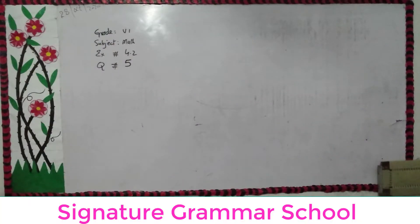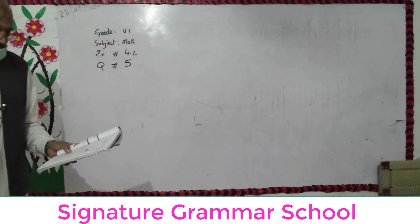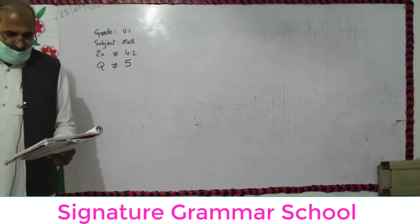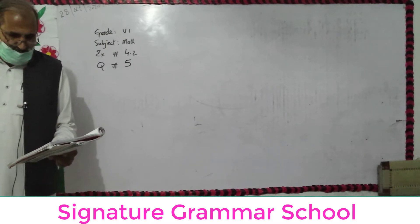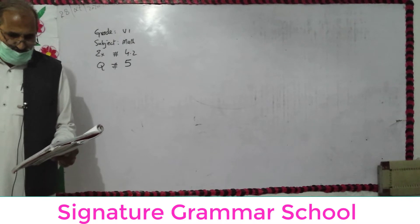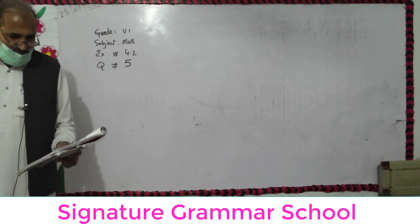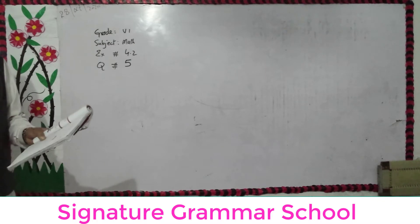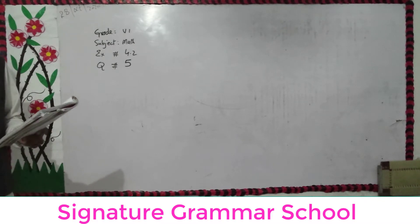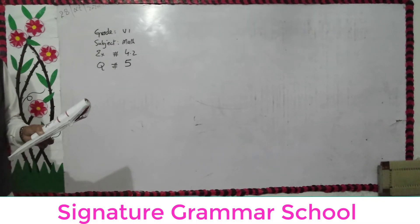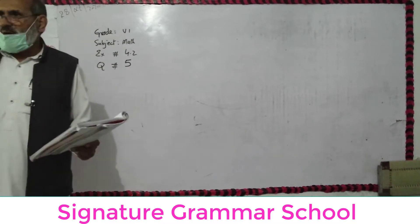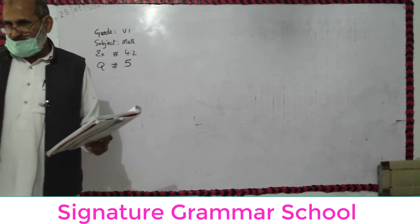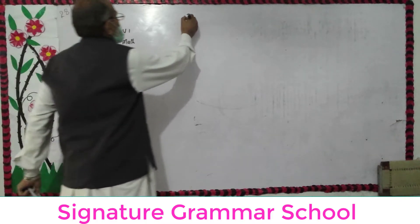Bismillahirrahmanirrahim. Let me give you a question about exercise 5. Sana got 484 marks out of 550 marks. Find the percentage of her marks.